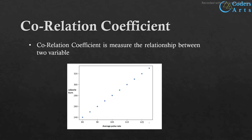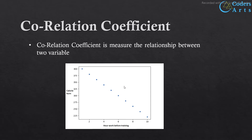If the correlation coefficient of two variables is minus one, then there is a perfect negative relationship between the two variables. In a negative relationship, one variable's value increases and the other variable's value tends to decrease. Here is the scatter plot of work hours before training and calorie burn. If we work longer hours, we tend to have lower calorie burn because we are exhausted before the training session.